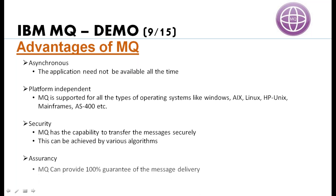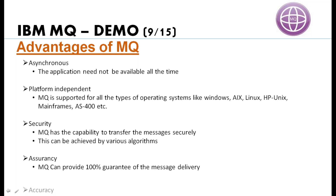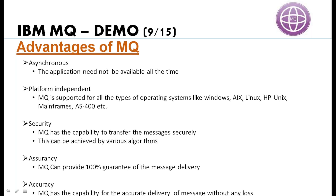Assurance: MQ can provide 100% guarantee of message delivery. If a source application initiates a message transmission, it is going to be delivered — it will not be lost. Accuracy: MQ has the capability to accurately deliver a message to the particular destination — it is not going to miss the destination. MQ has that kind of capability, and how it achieves this we will see in future classes.